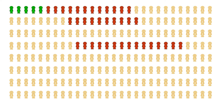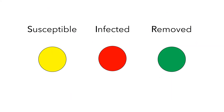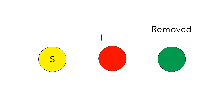Let's think about how we might model this situation mathematically. Here are our three groups, and I'll simplify this picture using S for the number of people in the susceptible group, I for the number of people in the infected group, and R for the number of people in the removed group.